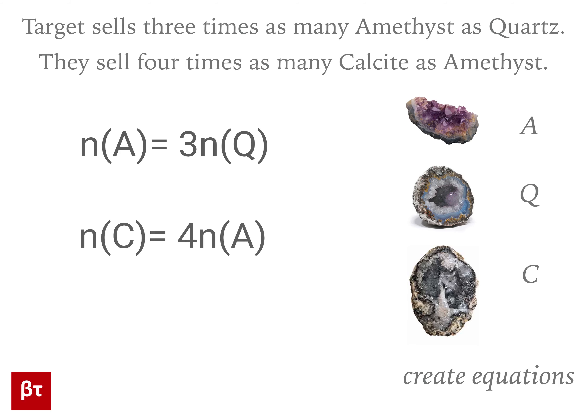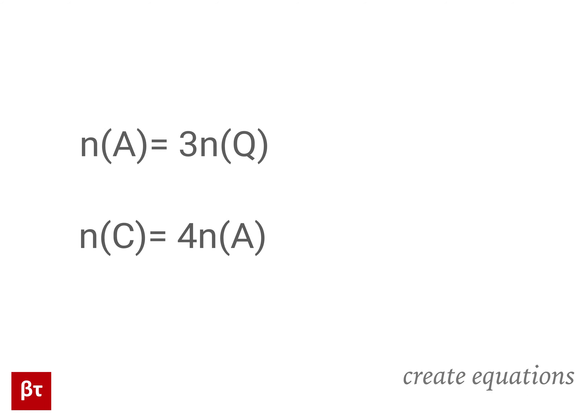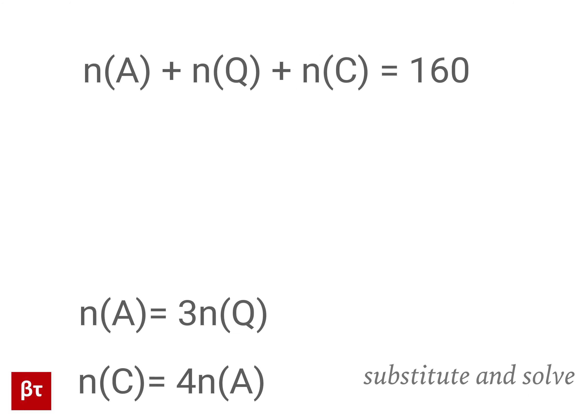Now that we have our information translated into equations, we can start to solve. I'm going to stop saying the number of elements or size each time, but keep in mind that that's what I'm talking about. Our first equation, A plus Q plus C equals 160, is our starting place.